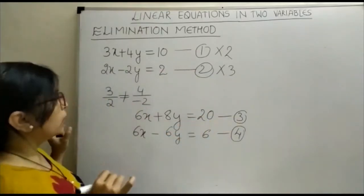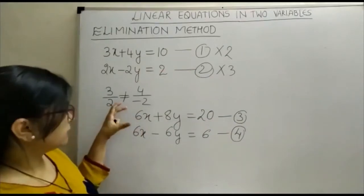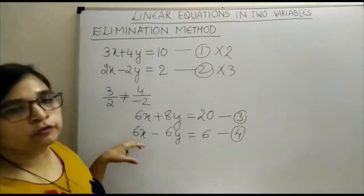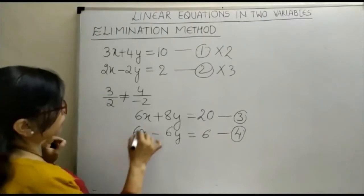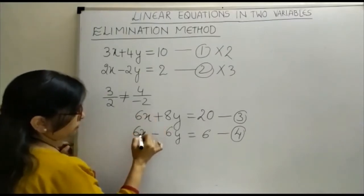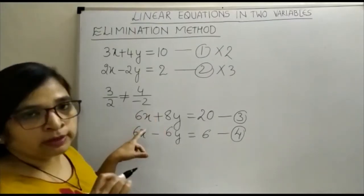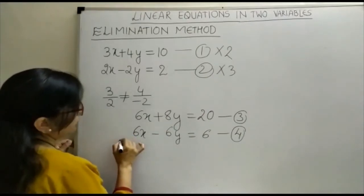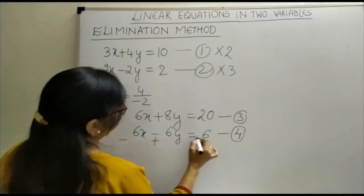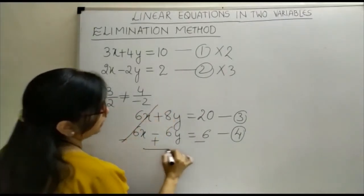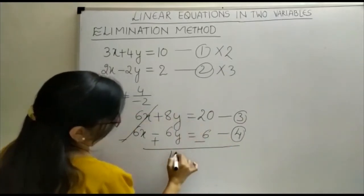So by doing so, you got the x term same. You can see here the coefficient of x is same. So what we will do? Since the sign is not different, we cannot get it cancelled. We will change the sign minus plus and minus, get it cancelled. Here it is 14y. 14y is equal to 14 implies y is equal to 1.